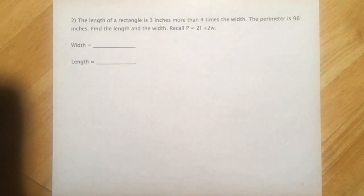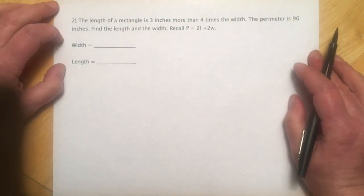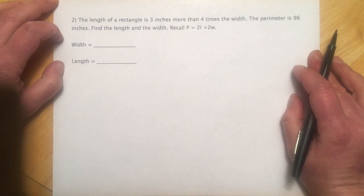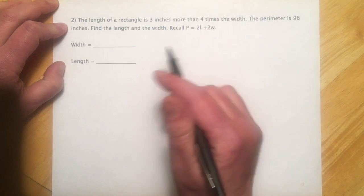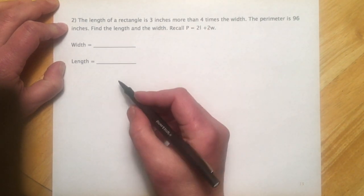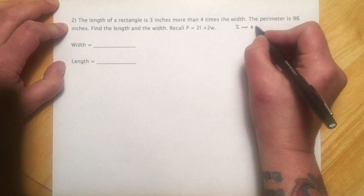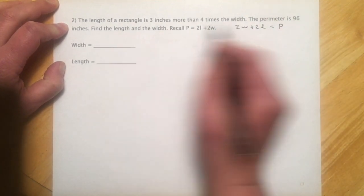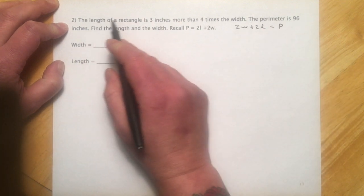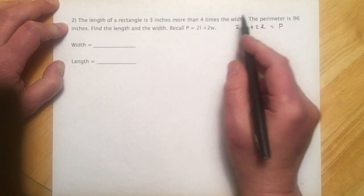Another geometry problem. The length of a rectangle is three inches more than four times the width. The perimeter is 96 inches. Find the length and the width. And then there's my recall: perimeter equals 2L + 2W.